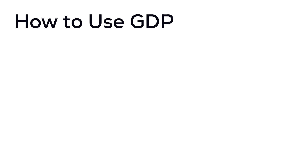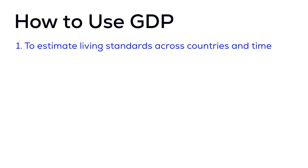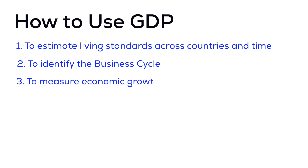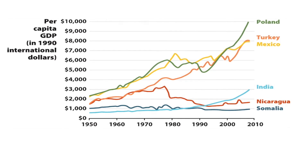Now that you know what GDP is, how do we use it in economics? We will use GDP for three main reasons: one, to estimate living standards across time and nations; two, to identify the business cycle; and three, to measure economic growth over long periods of time.